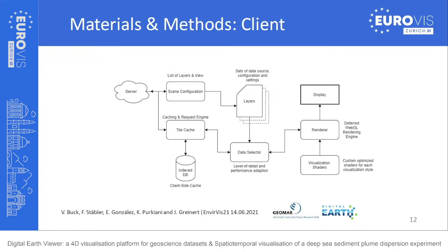On the client side we have communication with the server, which also gives us a scene configuration — a list of layers with data sources and settings such as color maps. These layers pass into a data selector that handles level of detail; for example, if you're far from the Earth you don't need maximum resolution data. The data selector uses a client-side cache to reduce network traffic and passes data into our renderer, which has a visualization shader for each layer type, making the display really efficient.